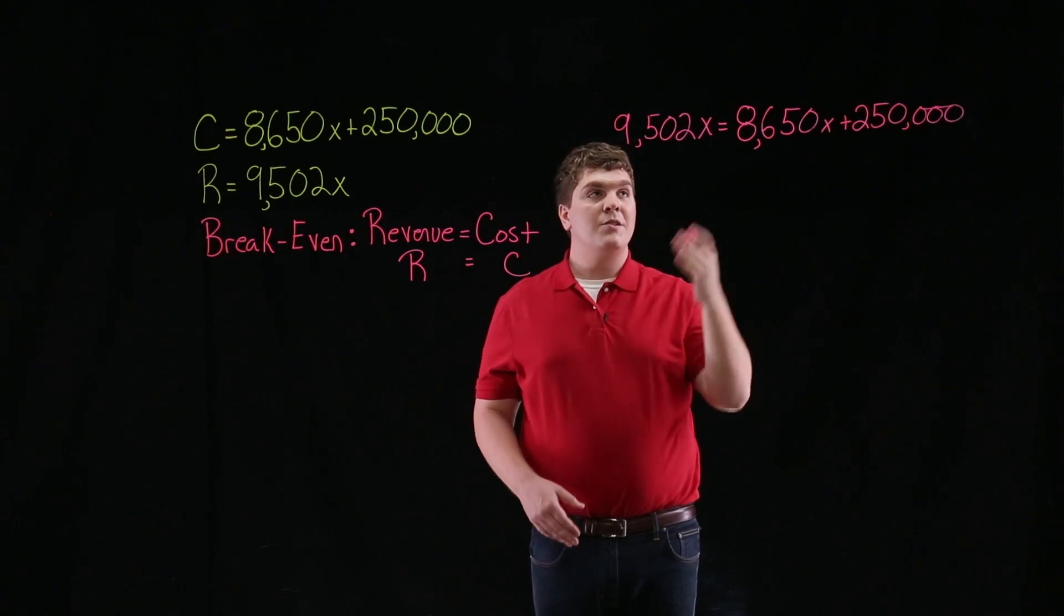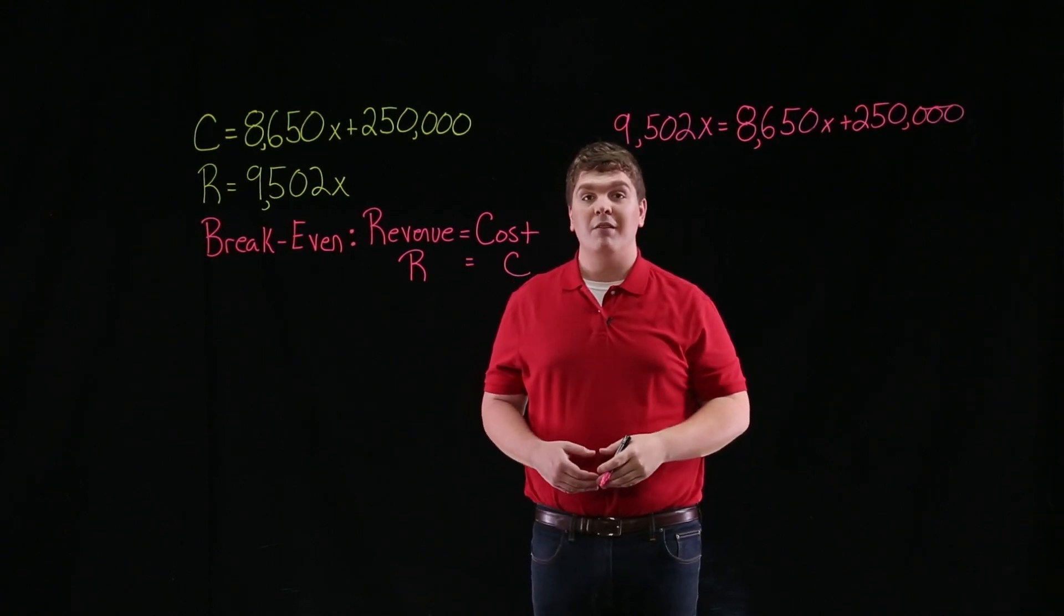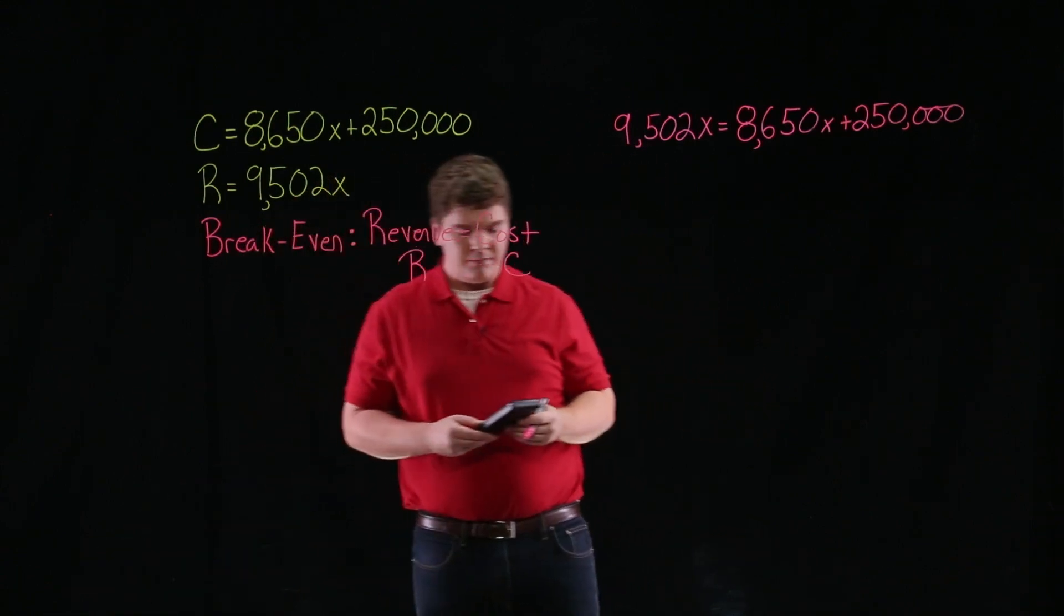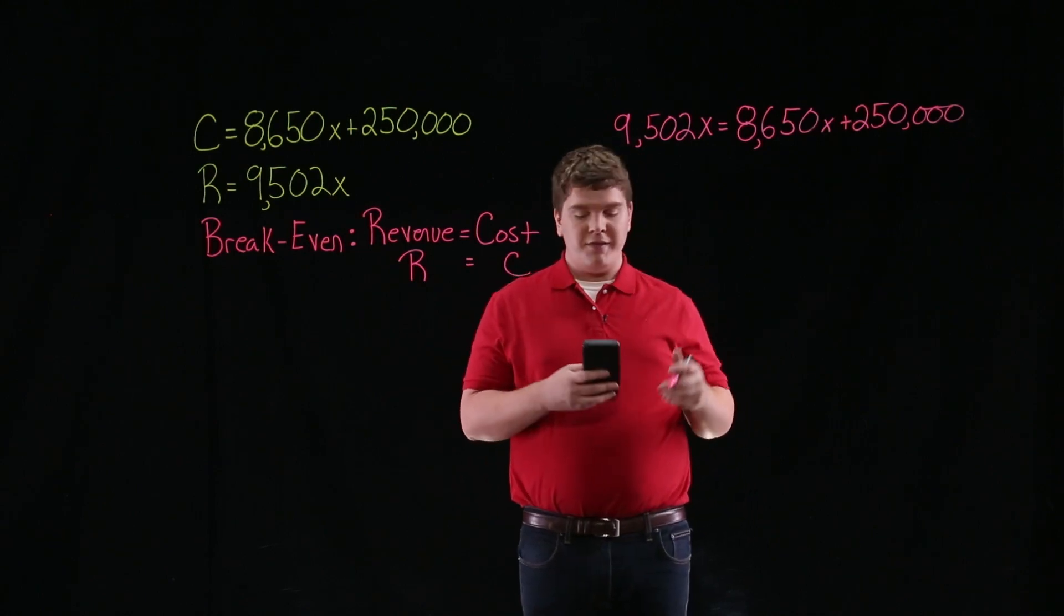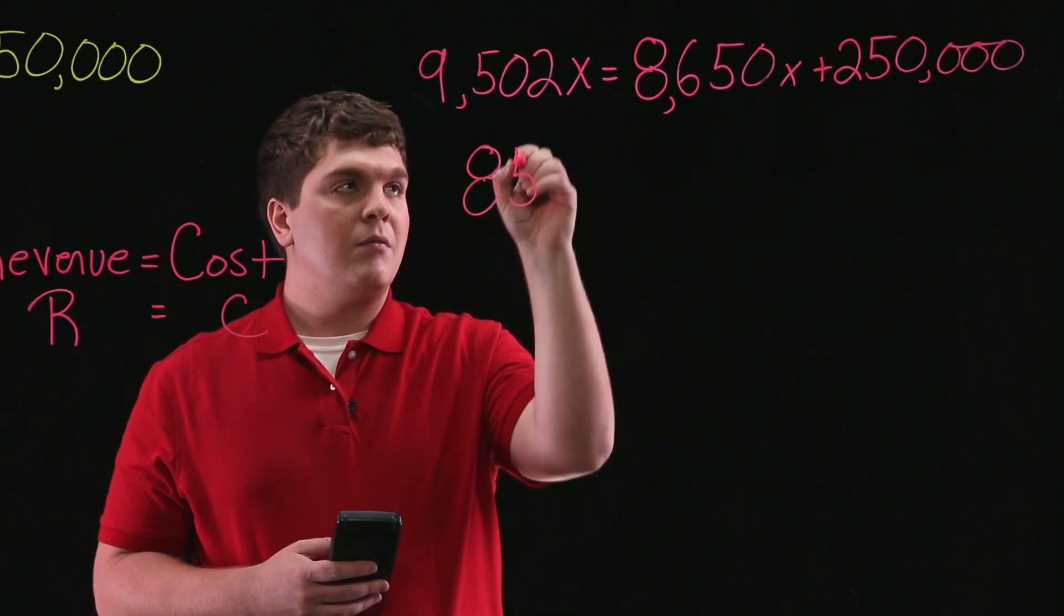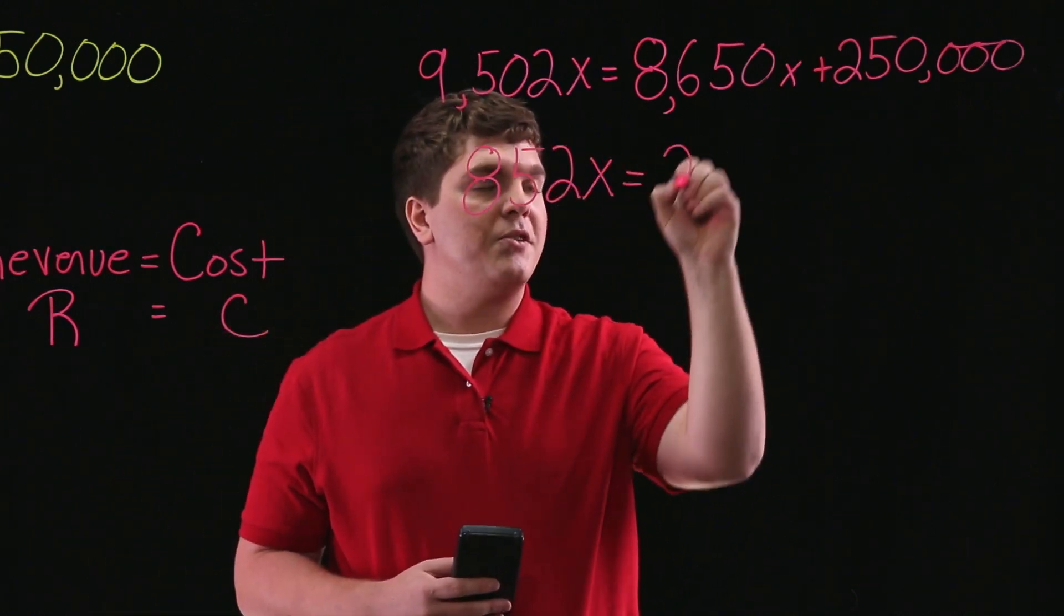Now we can begin solving for x by first subtracting 8,650x from both sides of the equation. This leaves us with 852x is equal to 250,000.